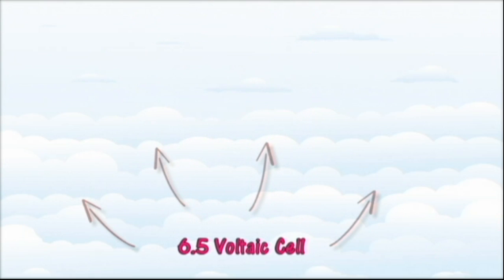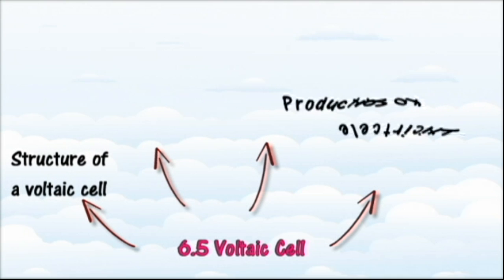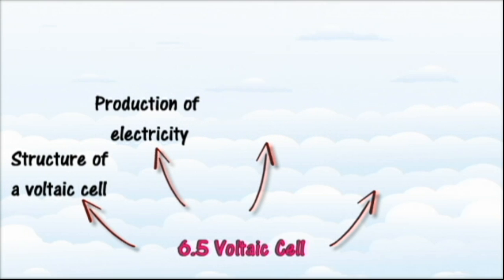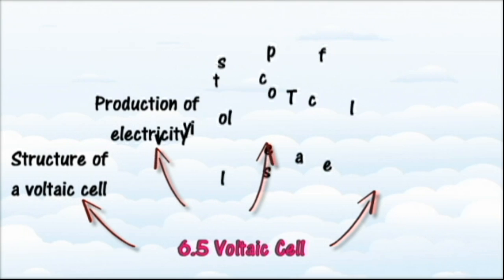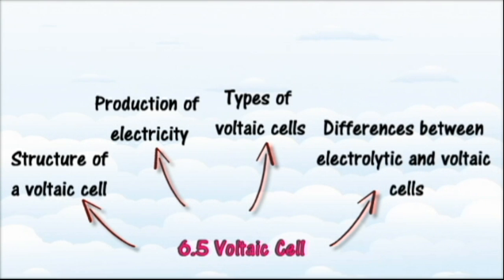In section 6.5 we will learn about the voltaic cell. At the end of this section you should be able to describe the structure of a simple voltaic cell and Daniel cell, explain the production of electricity from a simple voltaic cell, explain the reactions in a simple voltaic cell and Daniel cell, compare and contrast the advantages and disadvantages of various voltaic cells, and describe the differences between electrolytic and voltaic cells.